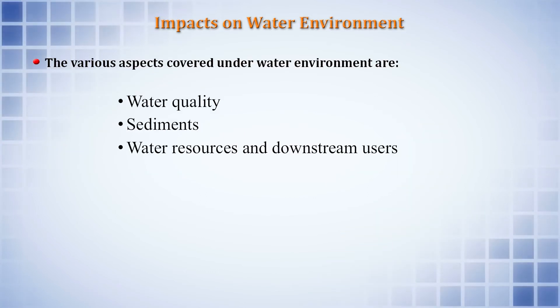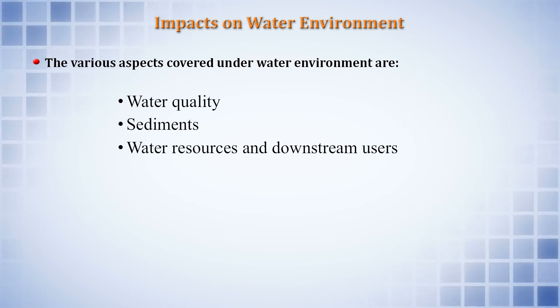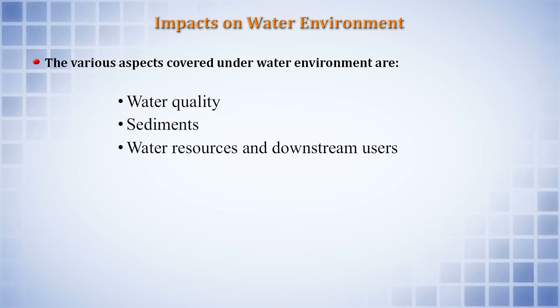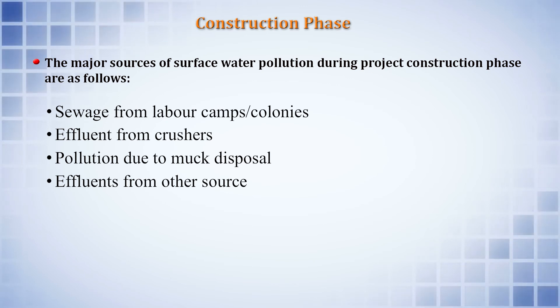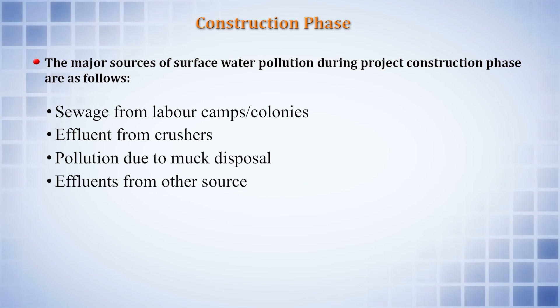For the water environment, the assessment must describe current water quality, sediments present and those that will be generated by the activity, and water resources available to downstream users. During the construction phase, major sources of water pollution include sewage from the labor camp, effluents from crushers, and pollution from muck disposal. During the operation phase, concerns include pollution from project colonies, reservoir water quality, eutrophication risk, and sedimentation.